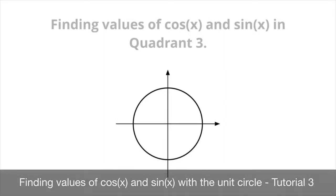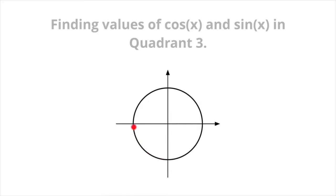We now learn how to find values of both cosine and sine for angles which fall within the third quadrant on the unit circle, so that would correspond to any of the points I'm currently highlighting on the unit circle. Now we're going to learn how to do this with some examples, so let's go right ahead and get started.